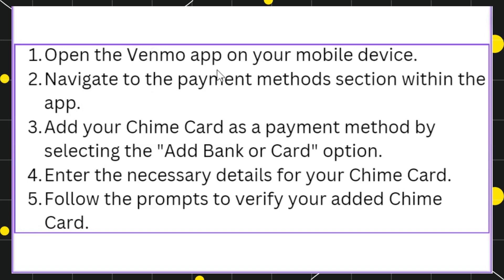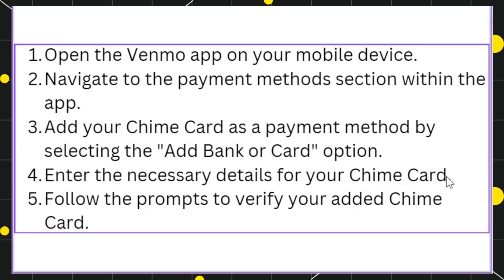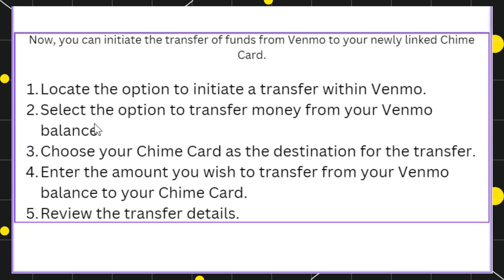First of all, you need to launch your Venmo mobile application. On the home page, navigate to the payment methods section. Once done, add your Chime card as a payment method by selecting the option called 'Add Bank or Card'. Enter the necessary details such as your Chime card number, CVV, and expiration date, then follow the on-screen instructions to add your Chime card to your Venmo account.